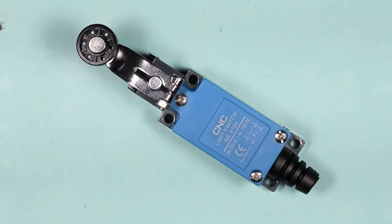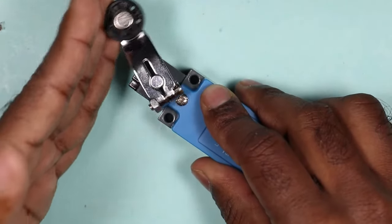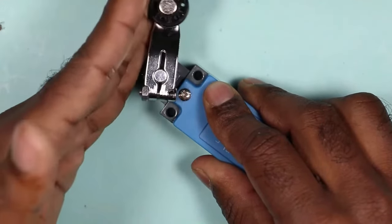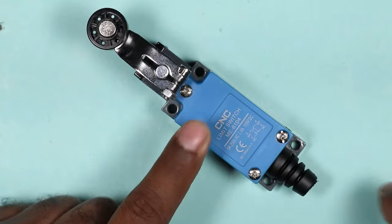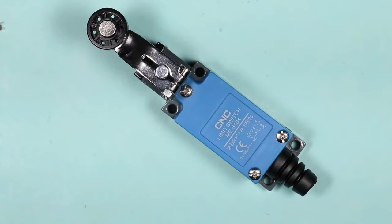Limit switch is a type of electromechanical device. I am referring this as electromechanical device because this switch is operated by the action of mechanical force. When you apply a mechanical force, then this switch generates electrical output. That is why this is electromechanical device.